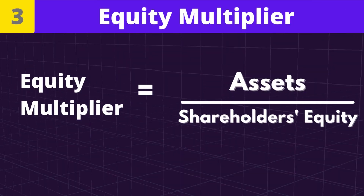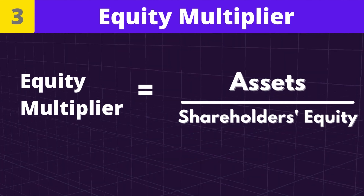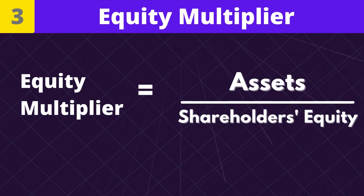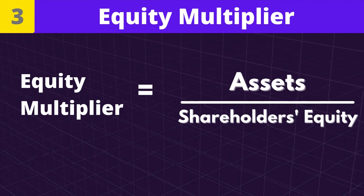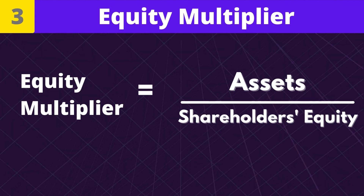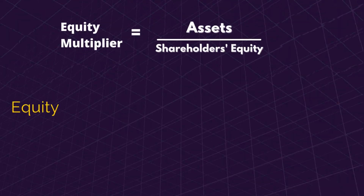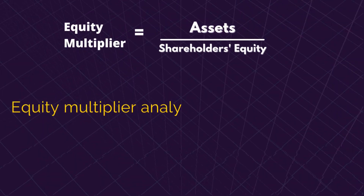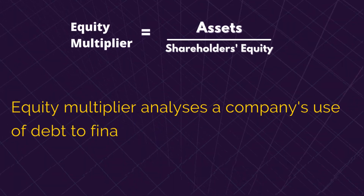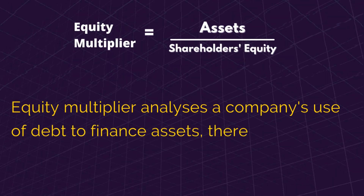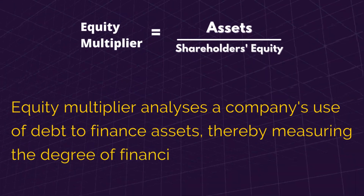Number 3: Equity Multiplier. Equity Multiplier is equal to assets divided by shareholders' equity. Equity Multiplier analyzes a company's use of debt to finance assets, thereby measuring the degree of financial leverage.